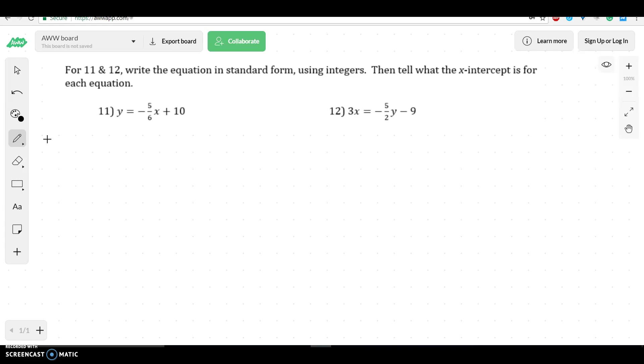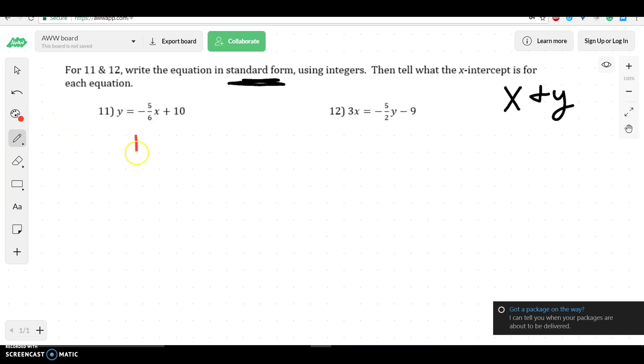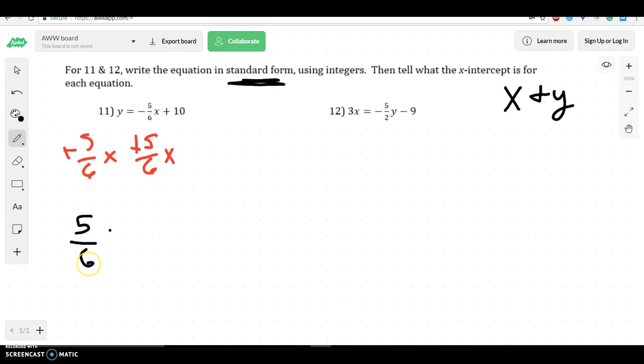When I'm looking at these two equations and I need to write them in standard form, what you have to realize is that standard form is different than slope-intercept form because the x and the y are on the same side. So that's your main goal, getting the x and y on the same side. With this one right here, for me to get the x and the y on the same side, I'd have to add this x to the other side so it's on the same side as the y. That would give me 5/6x plus y equals 10.